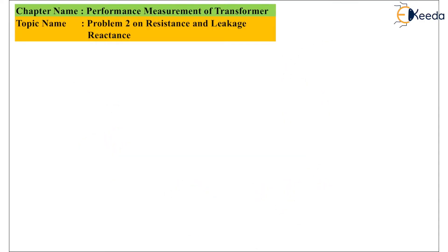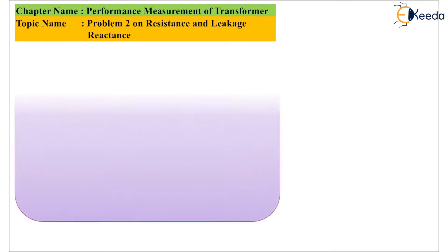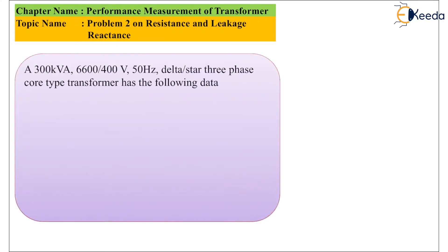So the problem can be stated as: A 300kVA, 6600/400V, 50Hz, delta to star connected 3-phase transformer core type has the following data.